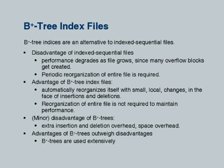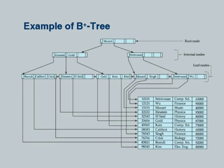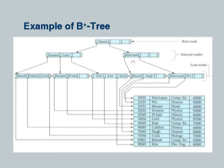A B+ tree reorganizes itself with small local changes - no insertion or deletion requires changing the whole index. Each update can be done fairly fast. The predecessor, index sequential files used by IBM mainframes, used overflow blocks and various tricks, but the index became progressively inefficient over time and had to be rebuilt. B+ trees rebuild themselves incrementally. There is a small space overhead, but that is viewed as acceptable given the benefits, which is why they have become universally used.